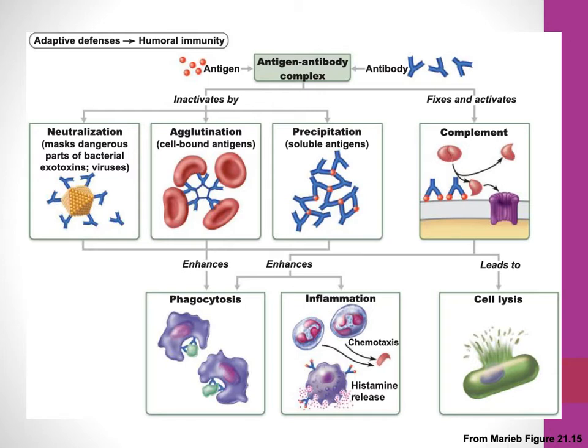In the complement cascade, we get activation of C4, C2, C3, C5, and we get the membrane attack complex, which leads to cell lysis. During complement activation, other subunits go off and cause inflammation and can also lead to phagocytosis. Antibodies can also be neutralizing — they can bind to portions of bacteria, exotoxins, or viruses so that those pieces of the microbe can't function. Some drugs being investigated involve antibodies that block receptors on viruses to neutralize them.